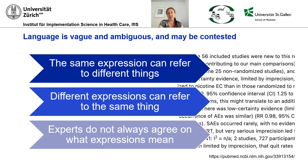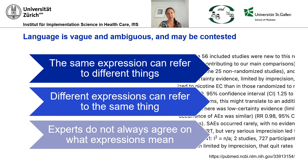And of course, this happens really all the time when people speak different languages, but it even happens within a single language because language is flexible. And the flexibility of language is a good thing, but it may create challenges when you want to automatically assemble and integrate research across a lot of different contexts.